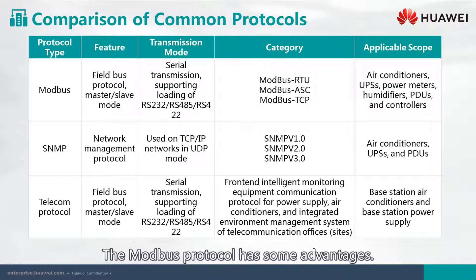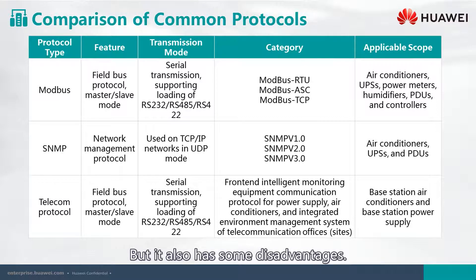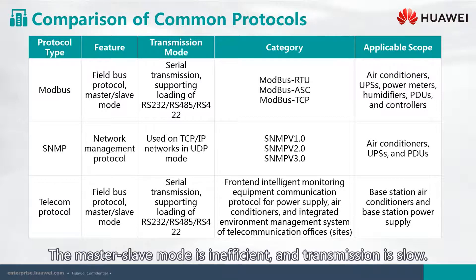The Modbus protocol has some advantages. For example, it is standard and open, it can support multiple electrical interfaces, and the frame format is simple and easy to use. But it also has some disadvantages: the Master-Slave mode is inefficient, and transmission is slow.